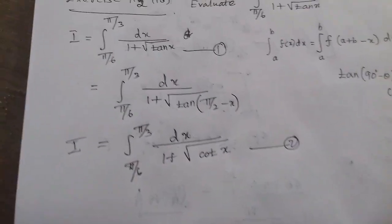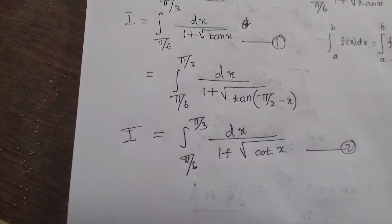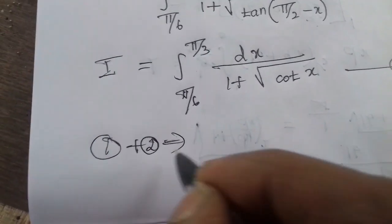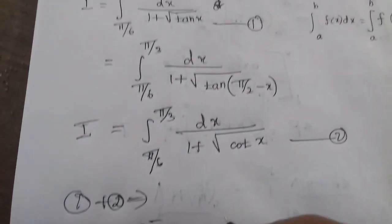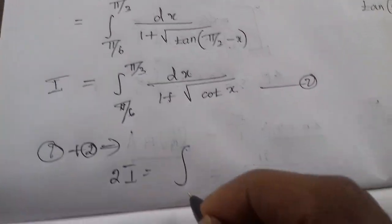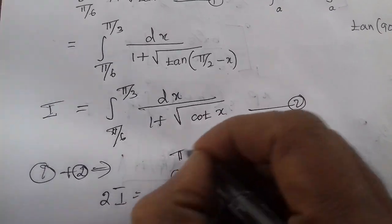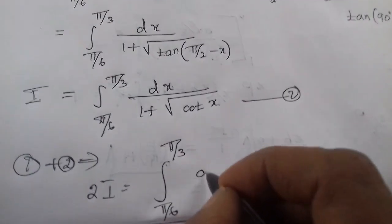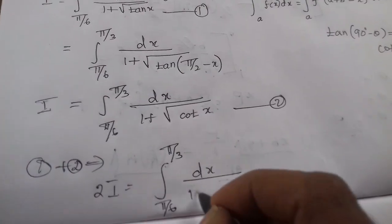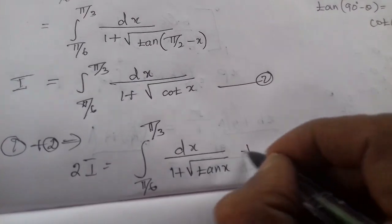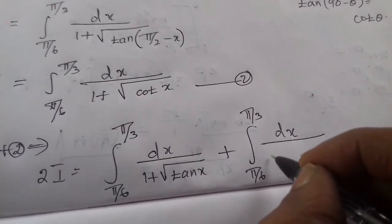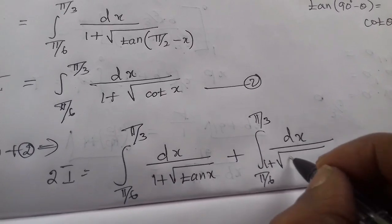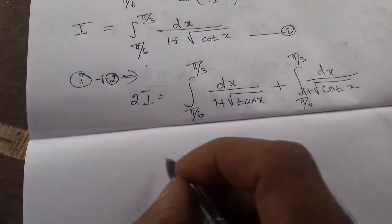This is the I needed. If you want to make the step, 1 plus 2 gives left-hand side, 2I equals right-hand side integral π/6 to π/3.